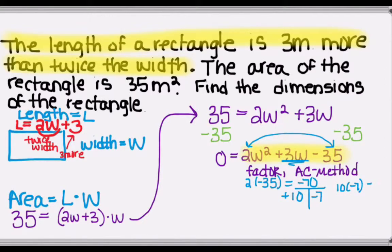And what works out in this case is 10, positive 10, and negative 7. If we double check, 10 times negative 7 is equal to negative 70, and 10 minus 7 is equal to 3.